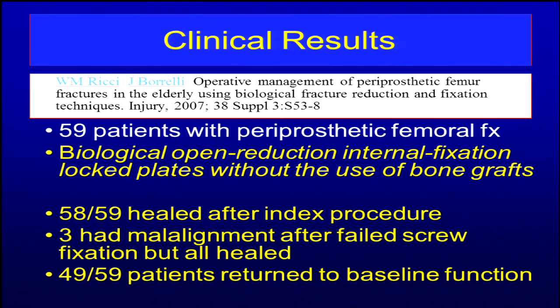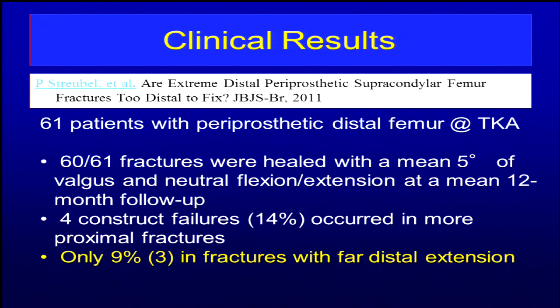Bill Ritchie has written up a number of series about distal femur fractures including periprosthetics, and what that series showed was that these patients actually do fairly well — 98% of them healed. There were a couple of problems with malalignment, and about two-thirds to three-quarters returned to full function. Also out of that series came Philip Struble's follow-up article about how far distal you can fix with a plate. You can fix extremely far distal fractures with a plate, and the fixation seems very robust. You can sometimes cheat the plate a little bit inferiorly to make sure you get four or five screws in that distal segment, and occasionally augment with cement. Only three out of 61 patients failed in a series of extremely far distal fractures.